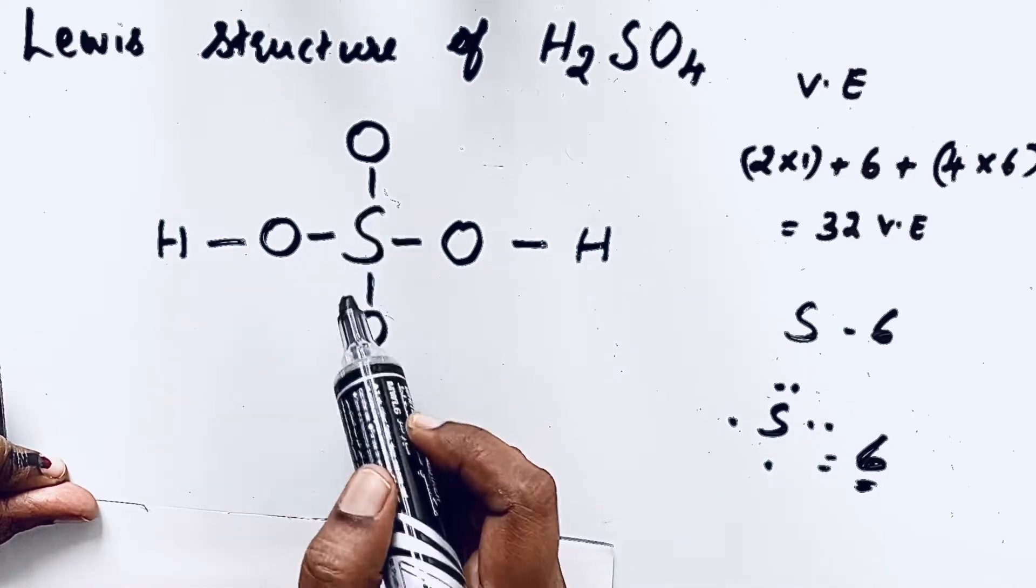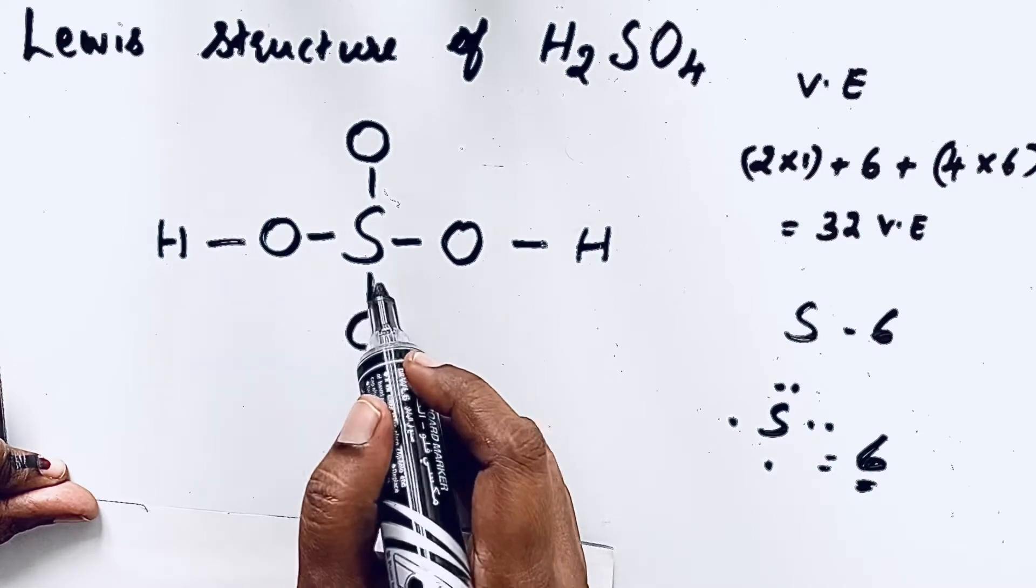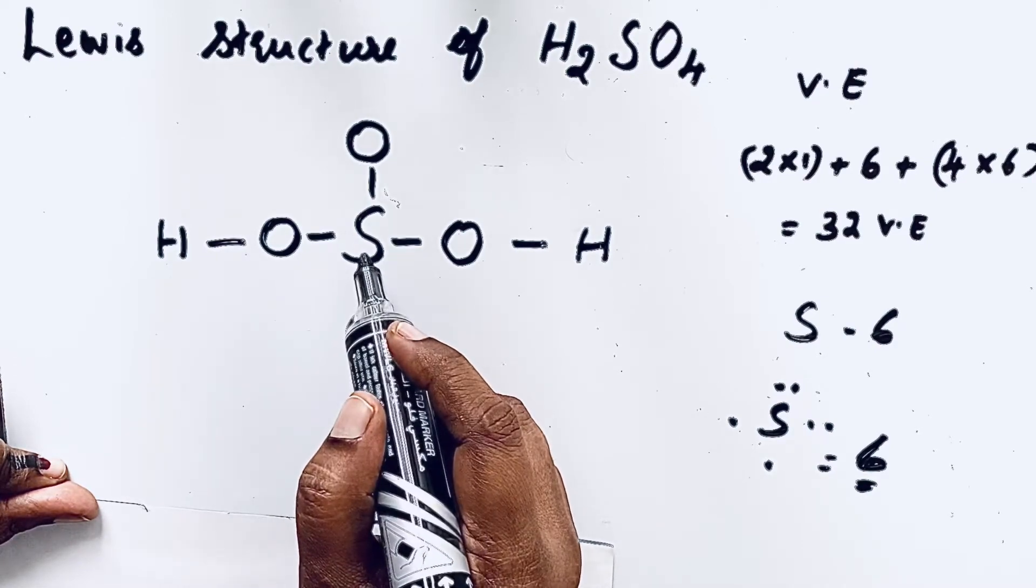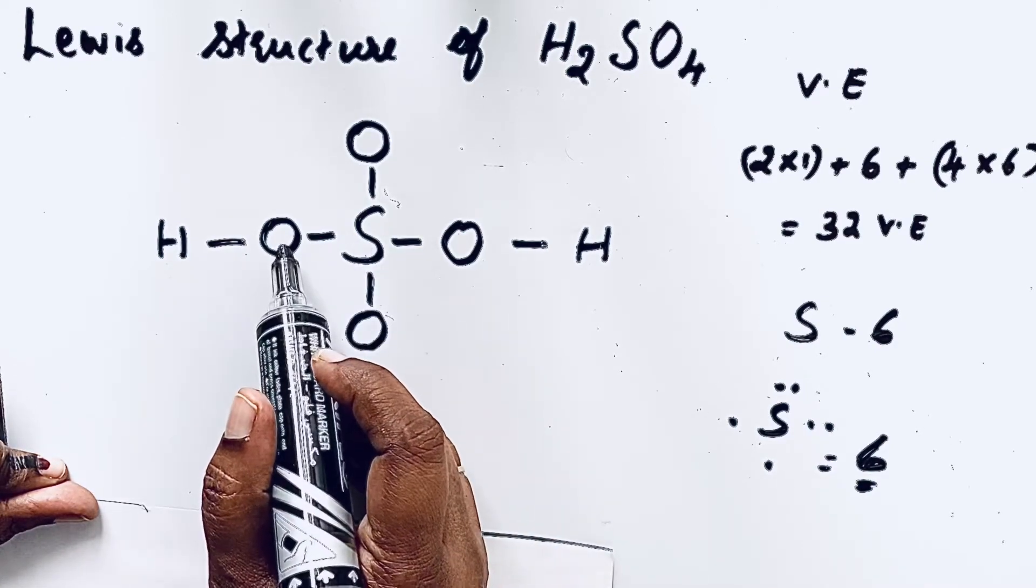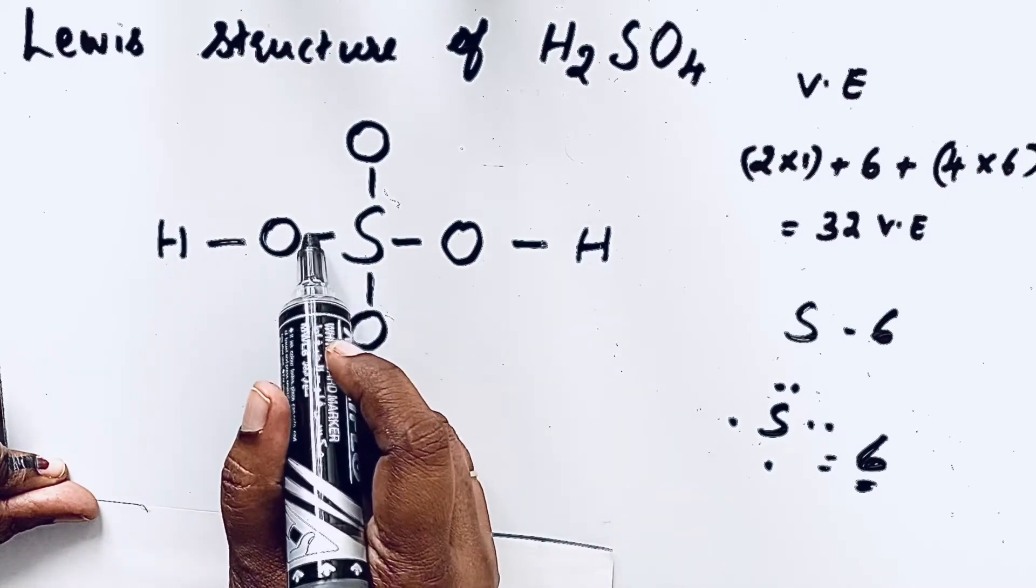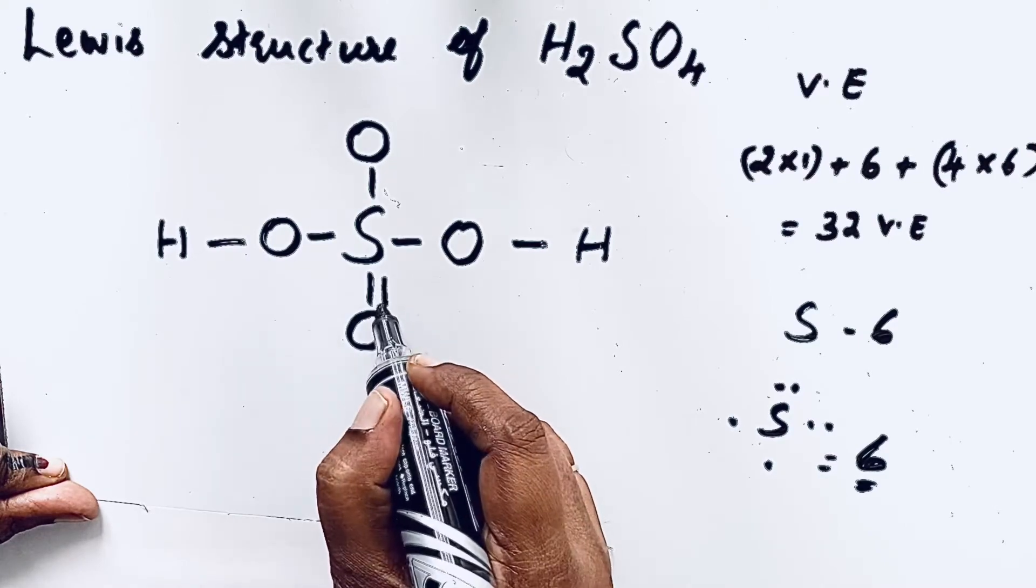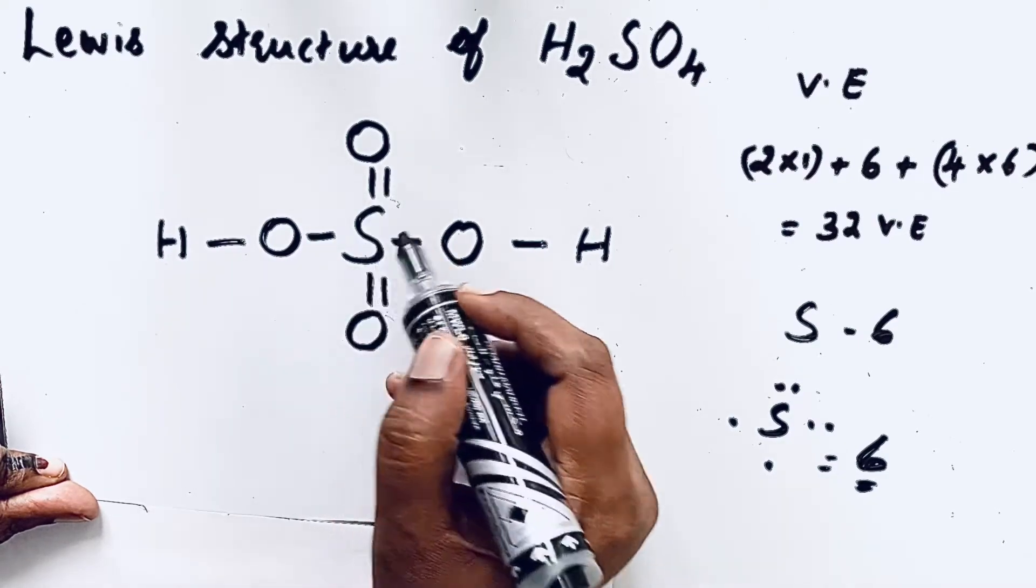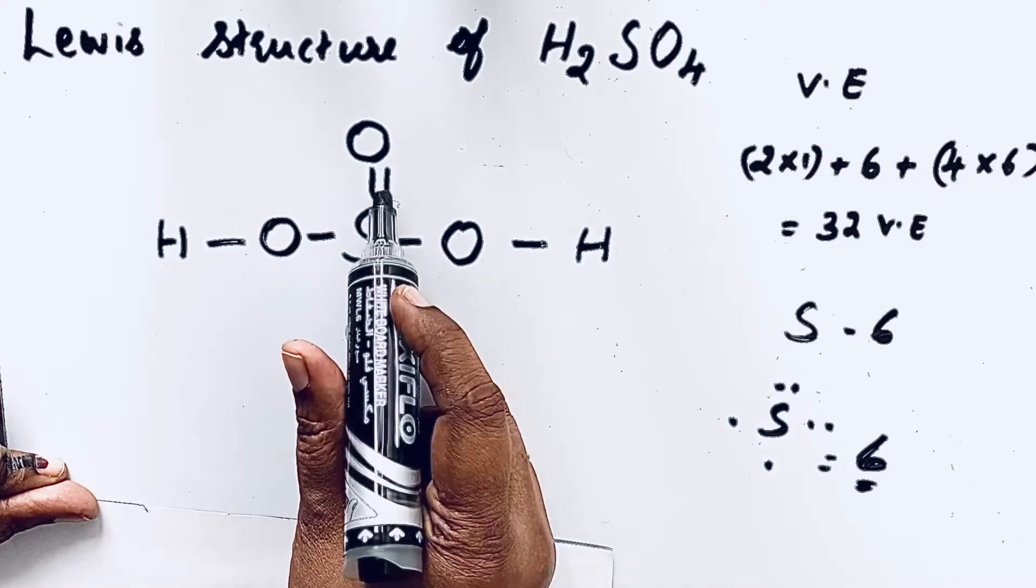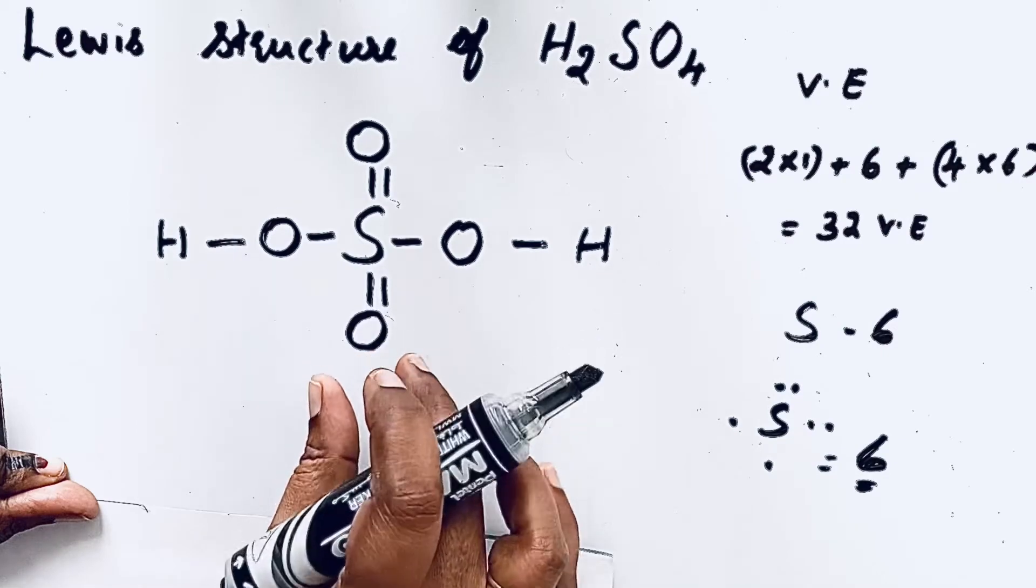But here see, one, two, three, four bonds are over. So we can draw two more bonds. When you draw the two bonds, you should see that the oxygen attached to the hydrogen does not carry any double bond. So we can draw one more bond here and another bond here. So now the sulfur: one, two, three, four, five, six. Six bonds around sulfur is over.